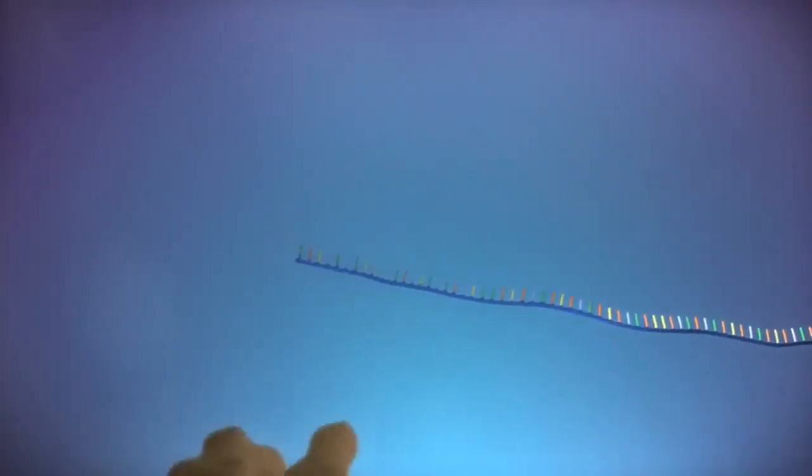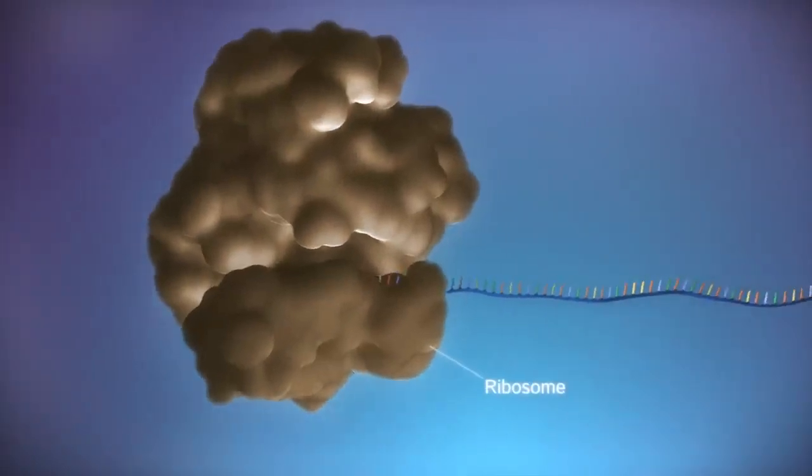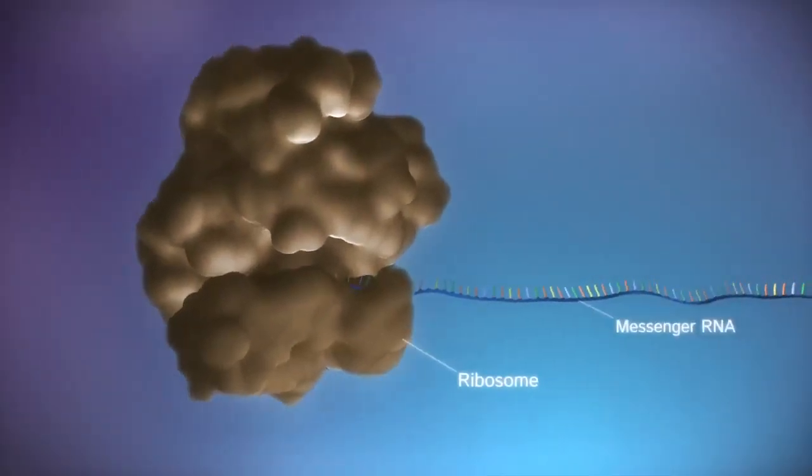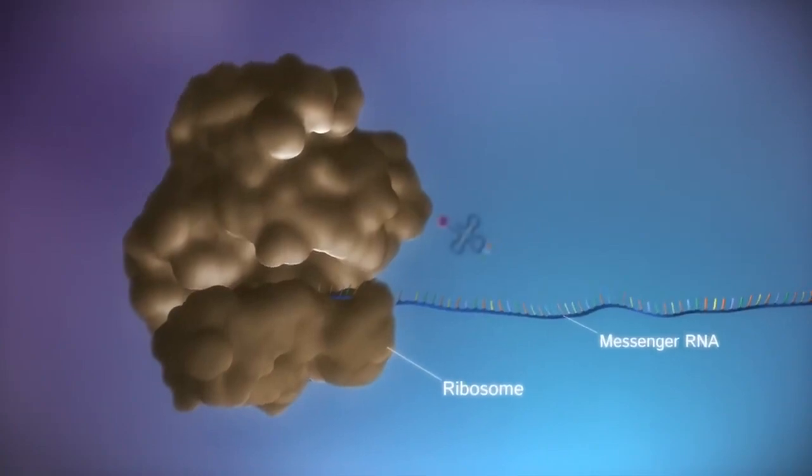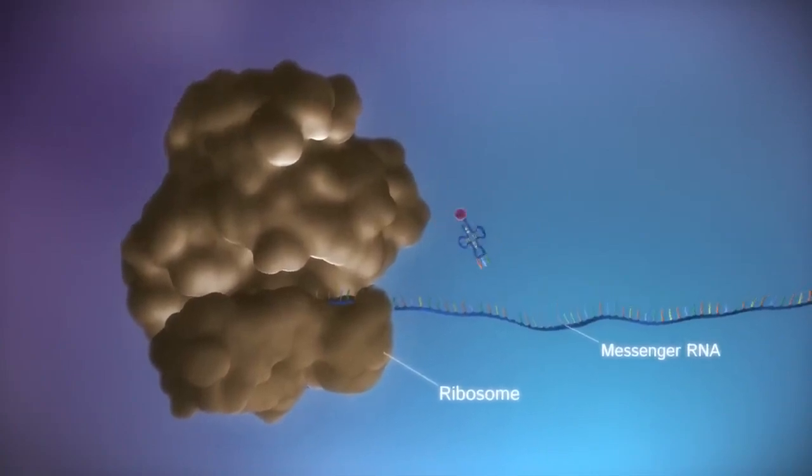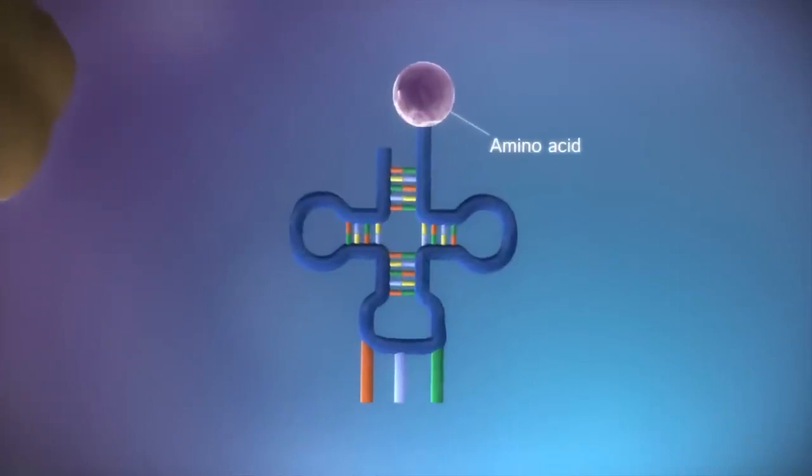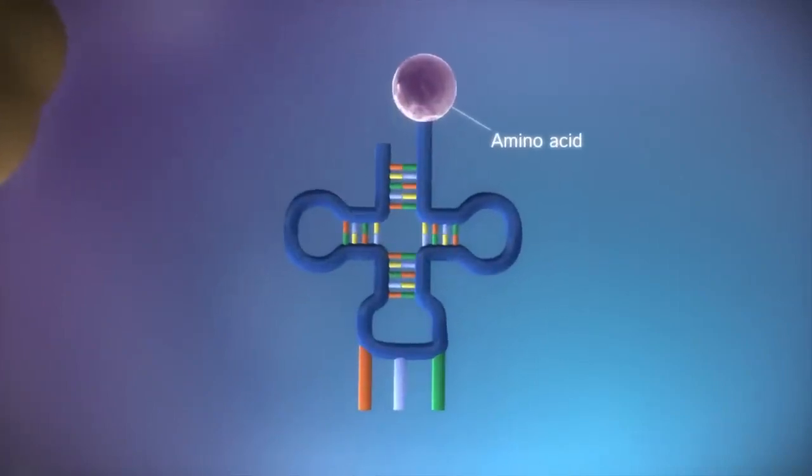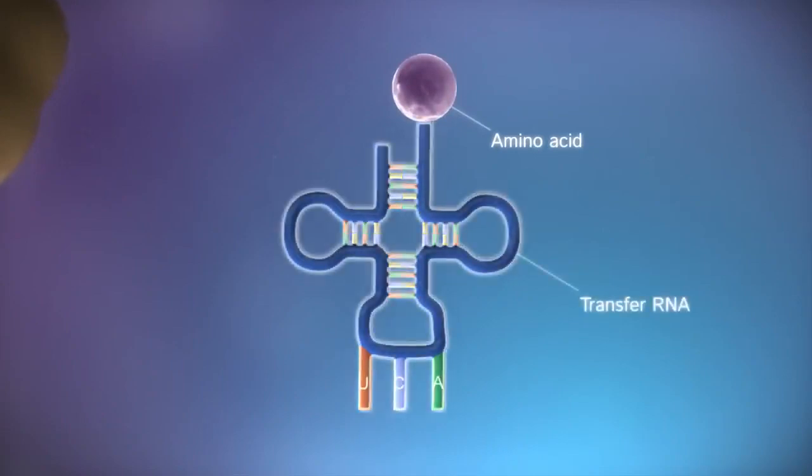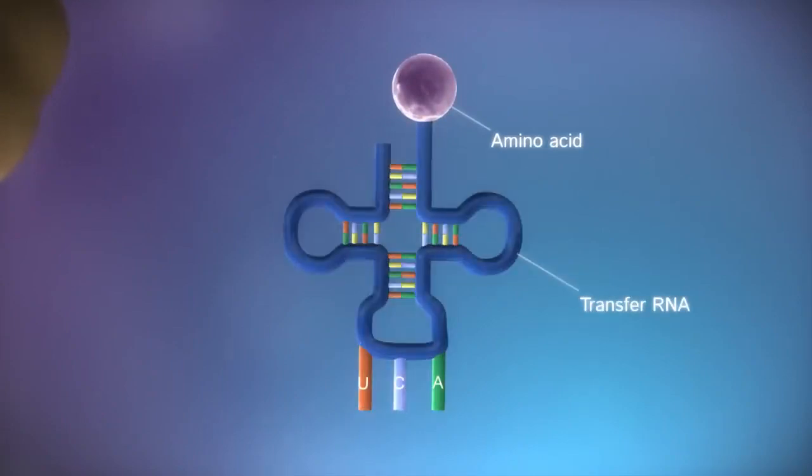Protein factories in the cytoplasm, called ribosomes, bind to the messenger RNA. The ribosome reads the code in the messenger RNA to produce a chain made up of amino acids. There are 20 different types of amino acid. Transfer RNA molecules carry the amino acids to the ribosome.